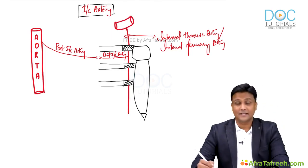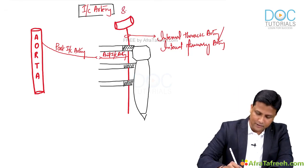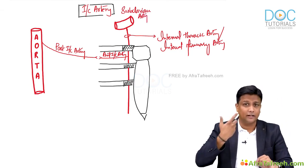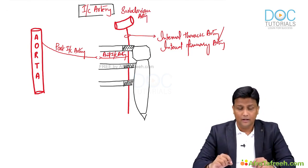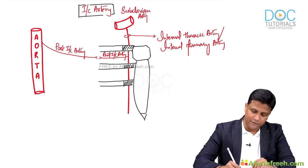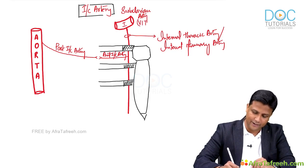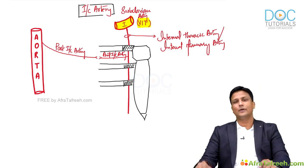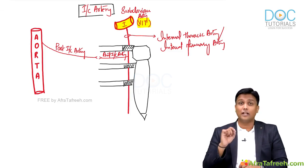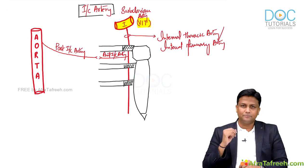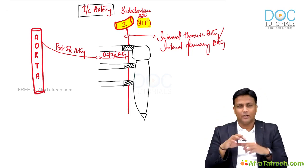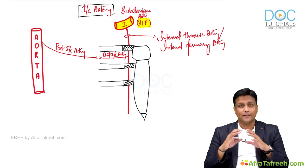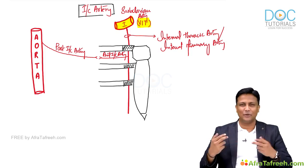Try to recall from the head and neck topic: the subclavian artery is divided into three parts with the help of the scalenus anterior muscle. Out of those three parts, the first part of the subclavian artery gives three branches — the VIT branches. V for vertebral artery, which goes up contributing to the circle of Willis. T stands for thyrocervical trunk. And I stands for internal thoracic artery. So now you can see the entire connection.